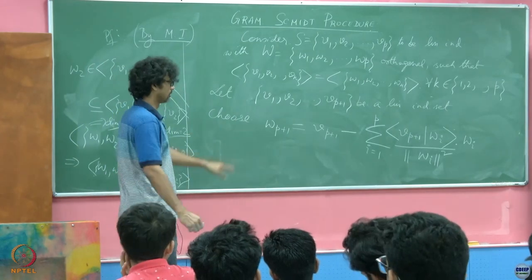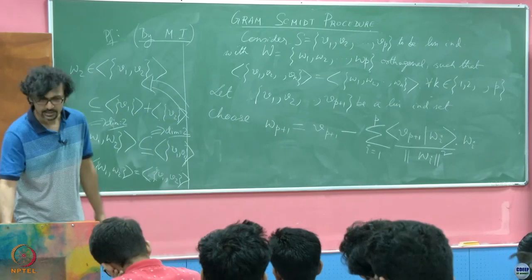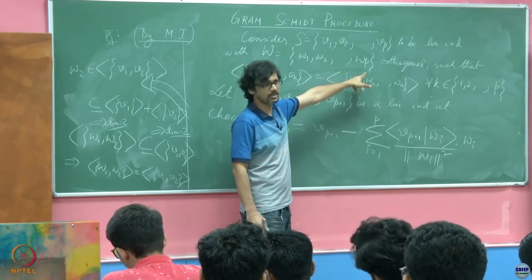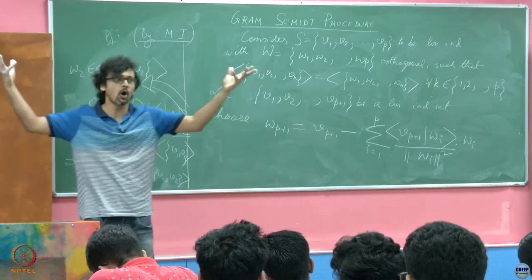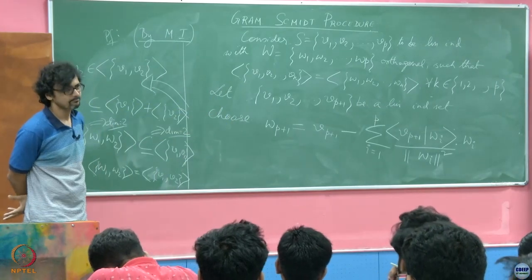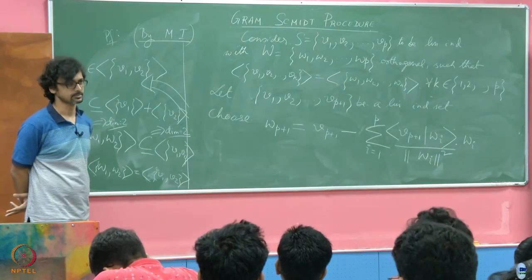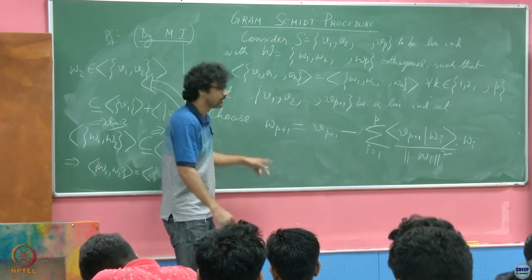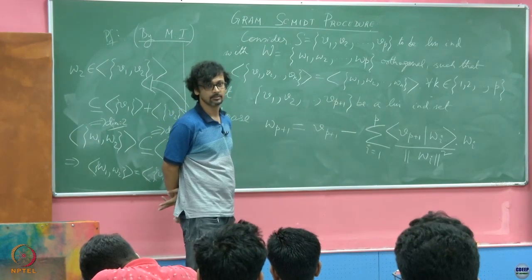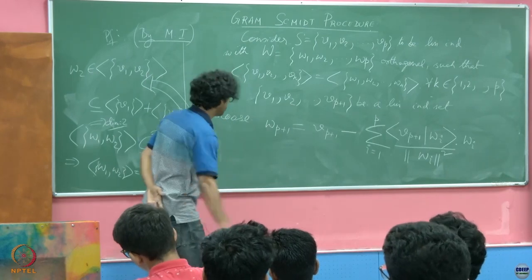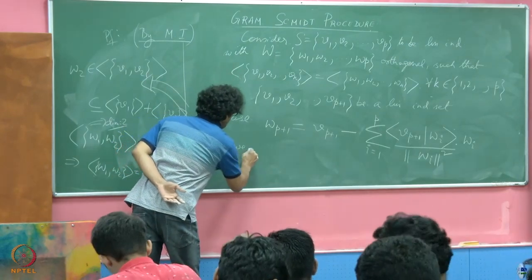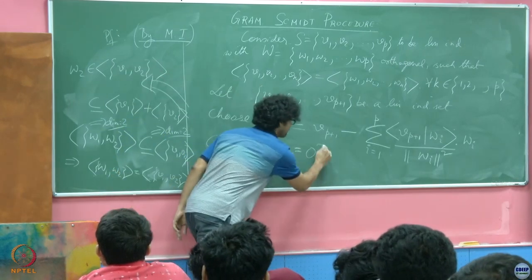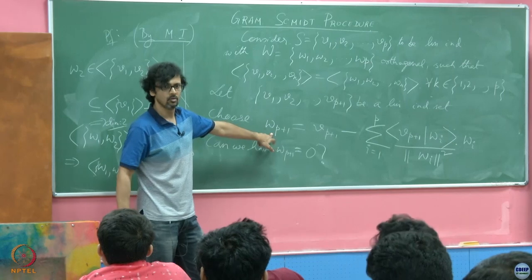Now what do we have to show? Once I have made this choice, supposedly this is the savior, the messiah, that is going to give me my P plus 1 dimensional subspace span by a bunch of orthogonal vectors. So what are the things that need to be checked for this? First thing, can this fellow be 0? Suppose this fellow is 0, so can we have W P plus 1 is equal to 0, that is the question. Suppose it is 0, what follows immediately?